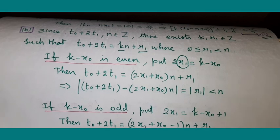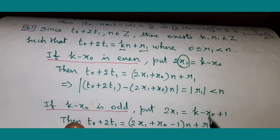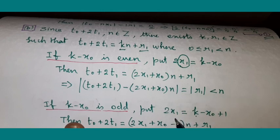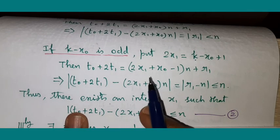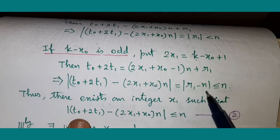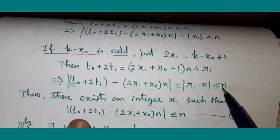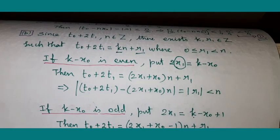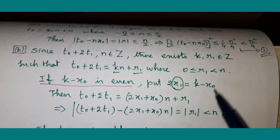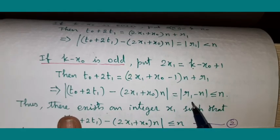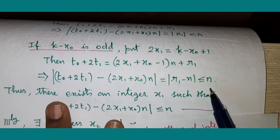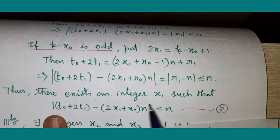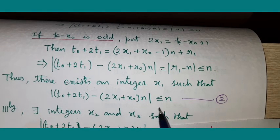Now, what happens in the odd case? Suppose K − X₀ is odd. Then this number is odd; add 1 to it and you get an even integer. That even integer we take as 2X₁. Therefore, in this case also, X₁ is an integer. When we take the relevant term to the left-hand side, we get the modulus of R₁ − N, and therefore this is less than or equal to N. Why not strictly less than? Because R₁ is after all the remainder, and the remainder may be 0. If it is 0, you get 0 − N, which is less than or equal to N. So even equality is possible. Thus, we proved there exists an integer X₁ satisfying this condition.